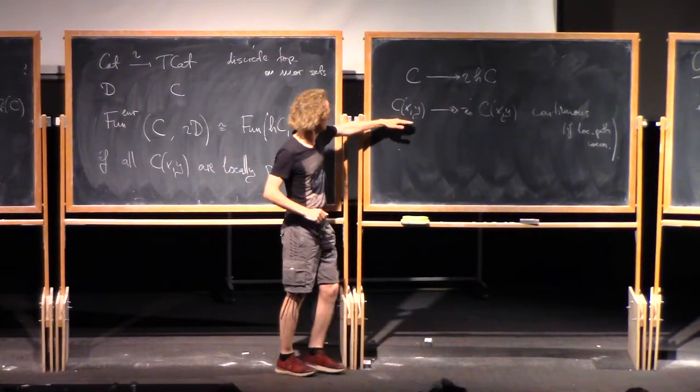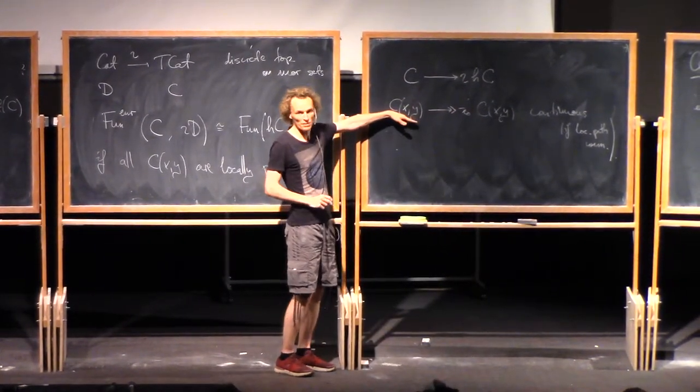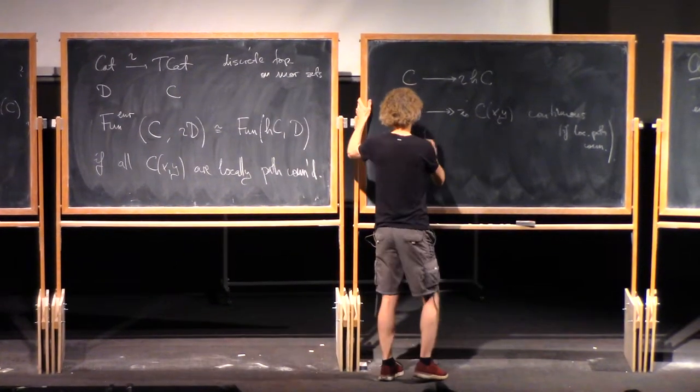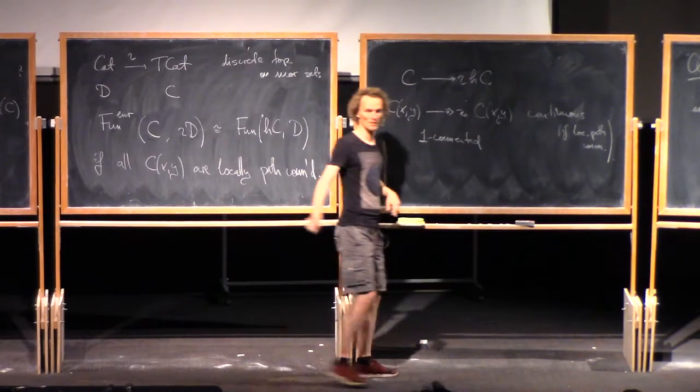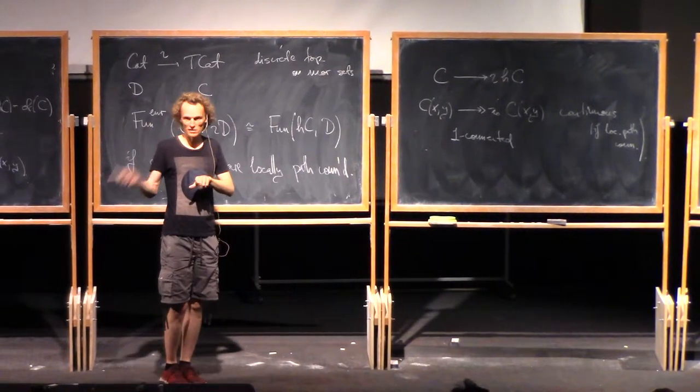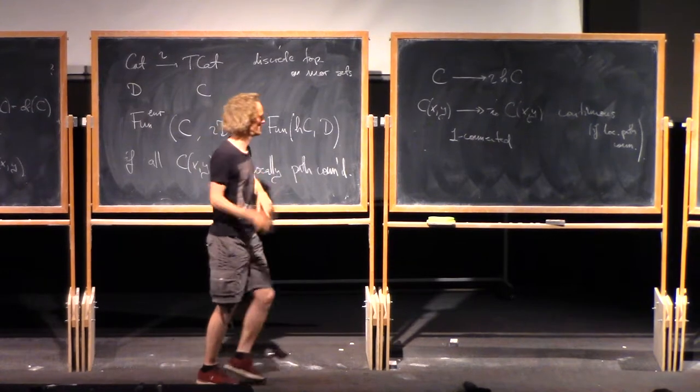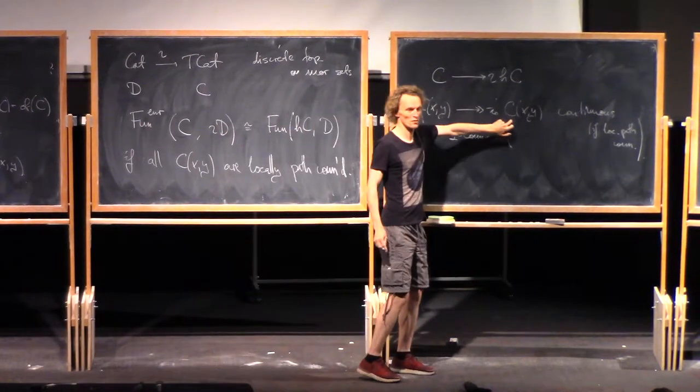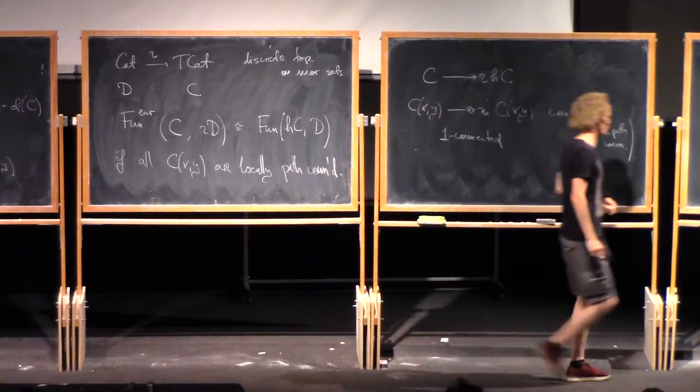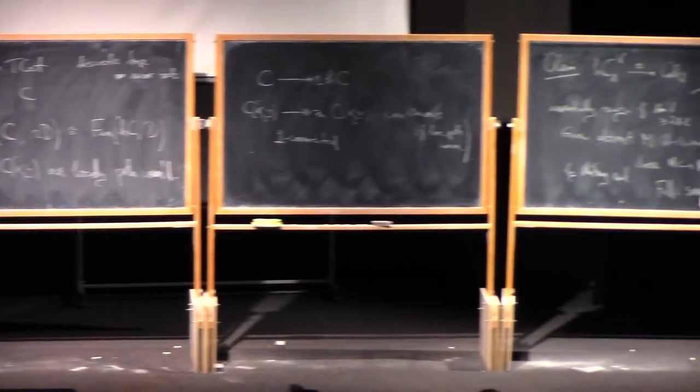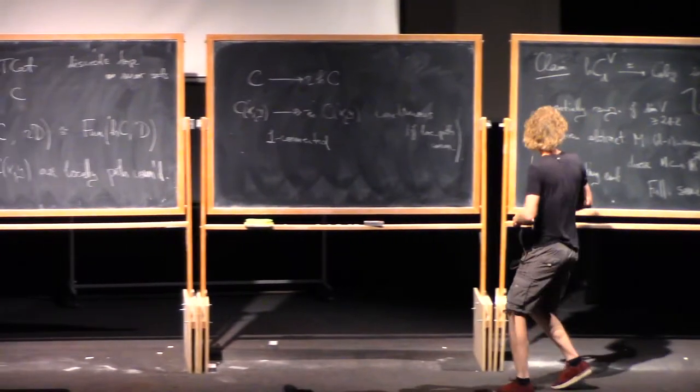Now this thing here is, of course, surjective. And if I regard it as a continuous map, it is one-connected. So one-connected means bijection on pi_0, surjection on pi_1. But pi_1 that is trivial, so that's, of course, true. And it's set up to be a bijection on pi_0.